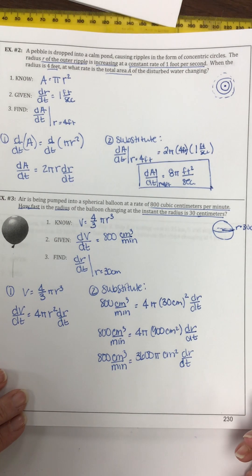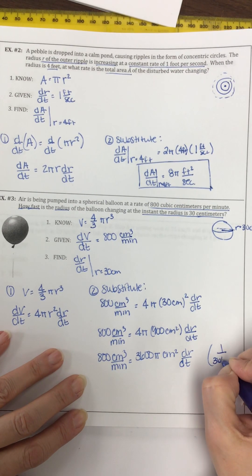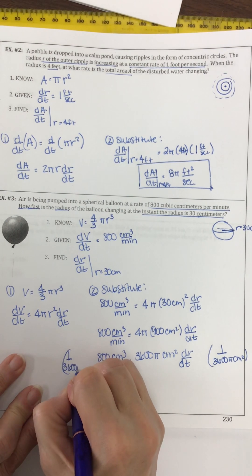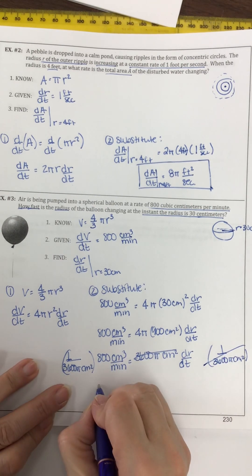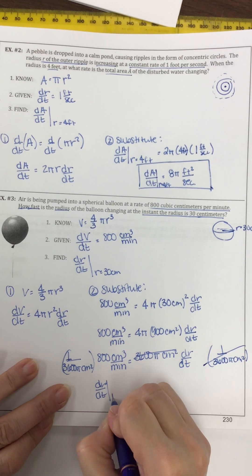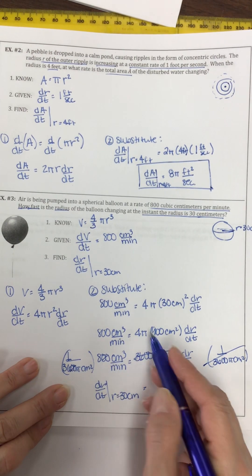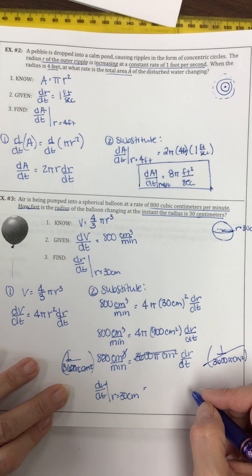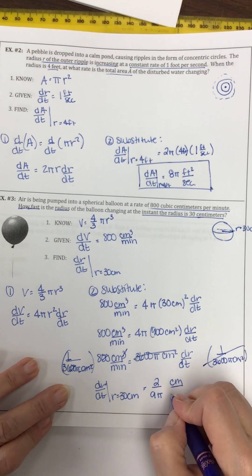Now I need dr/dt by itself, so I divide by 3,600 pi centimeters squared — or multiply by 1 over 3,600 pi centimeters squared. The reason I do that is because of the units. dr/dt when r is 30 centimeters: the zeros cancel out, the centimeters squared cancel, and I get centimeters over minutes for units. 8 over 36 reduces — 4 goes in there — to 2/9. So dr/dt equals 2 over 9 pi centimeters per minute.